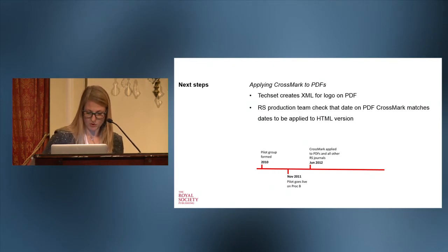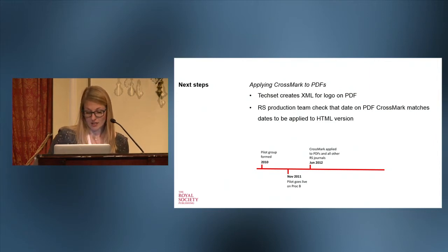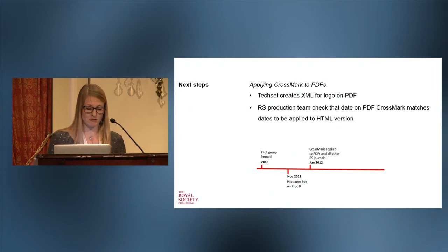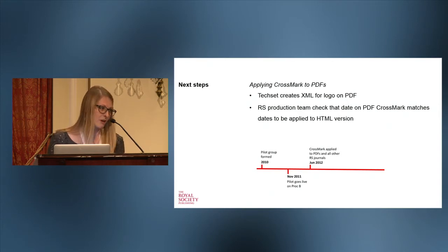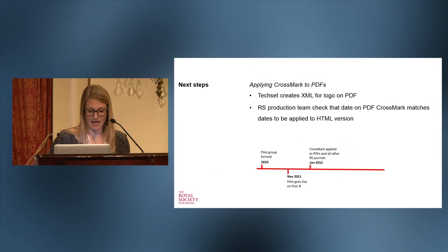Adding another step to the timeline: we then decided to add Crossmark to PDFs once we found that the HTML articles were working well — meaning the data behind them was accurate and being deposited promptly. For the PDFs, we took a slightly different approach: we asked our typesetting vendors to create the XML that sits behind the PDFs. This added an extra QA step for our production team — they had to check the XML on the PDFs and the HTML version to make sure everything matched up. It's a process that works really well for us, though it varies from publisher to publisher how you decide to implement it.